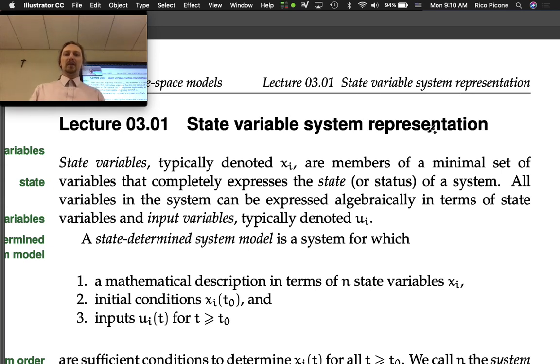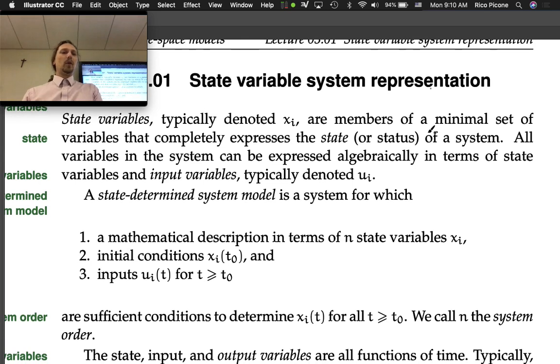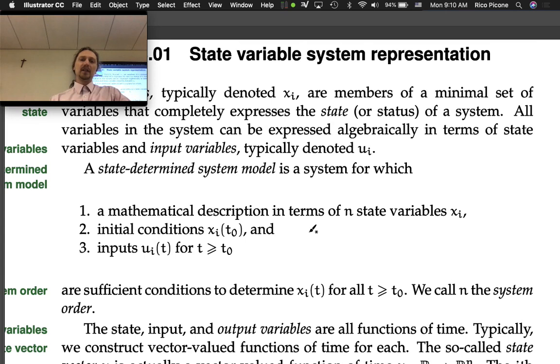A state-determined system model is a system for which a mathematical description in terms of n state variables x_i, initial conditions x_i(t_0), and the inputs u_i(t) for all time t ≥ t_0 are sufficient conditions to determine x_i(t) for all t ≥ t_0. We call n the system order. This is a definition we already saw, but now we're going to start using them.